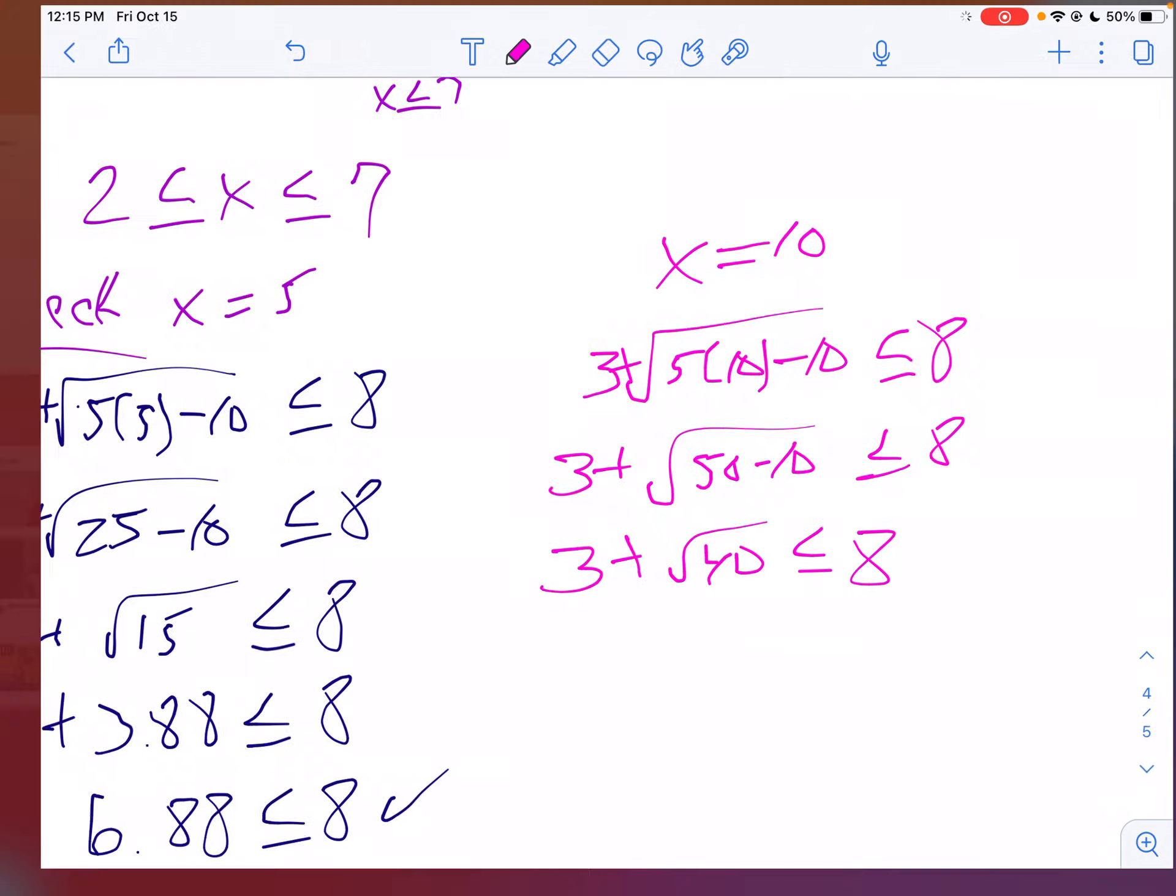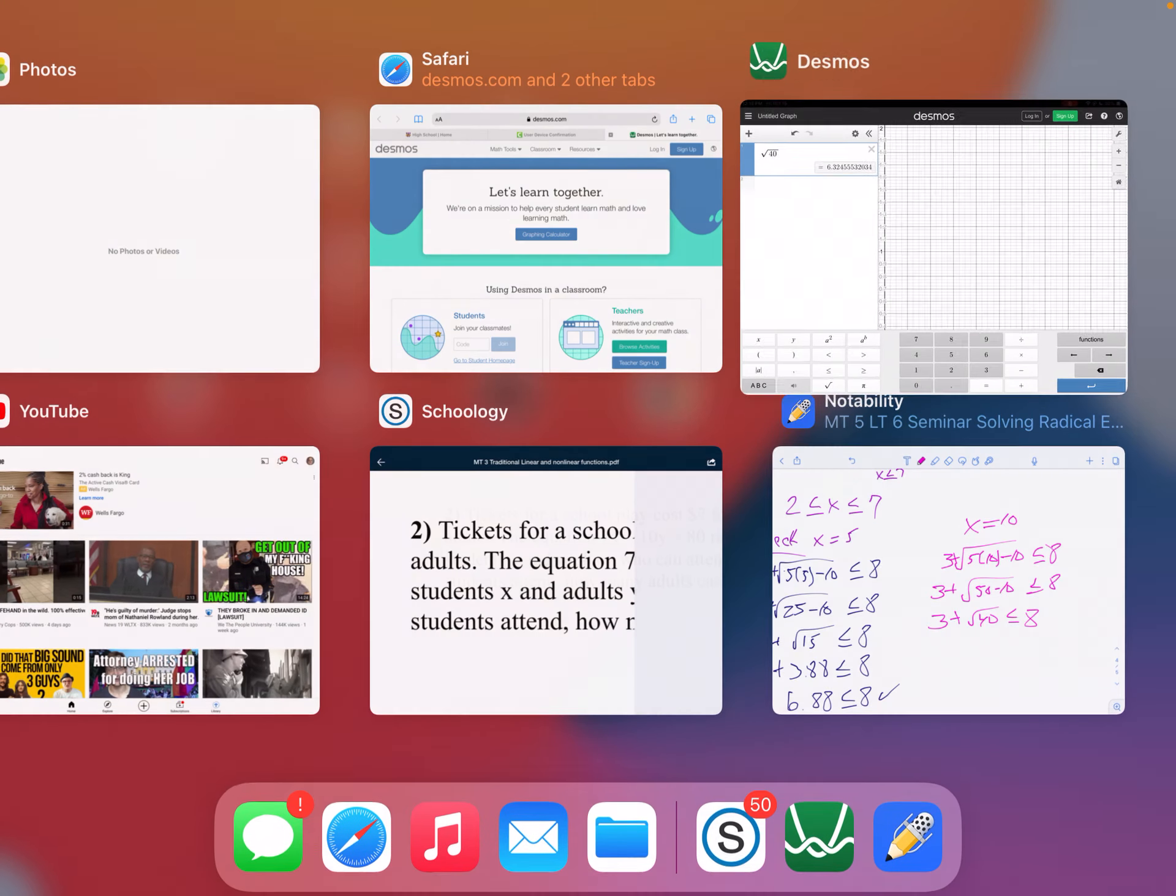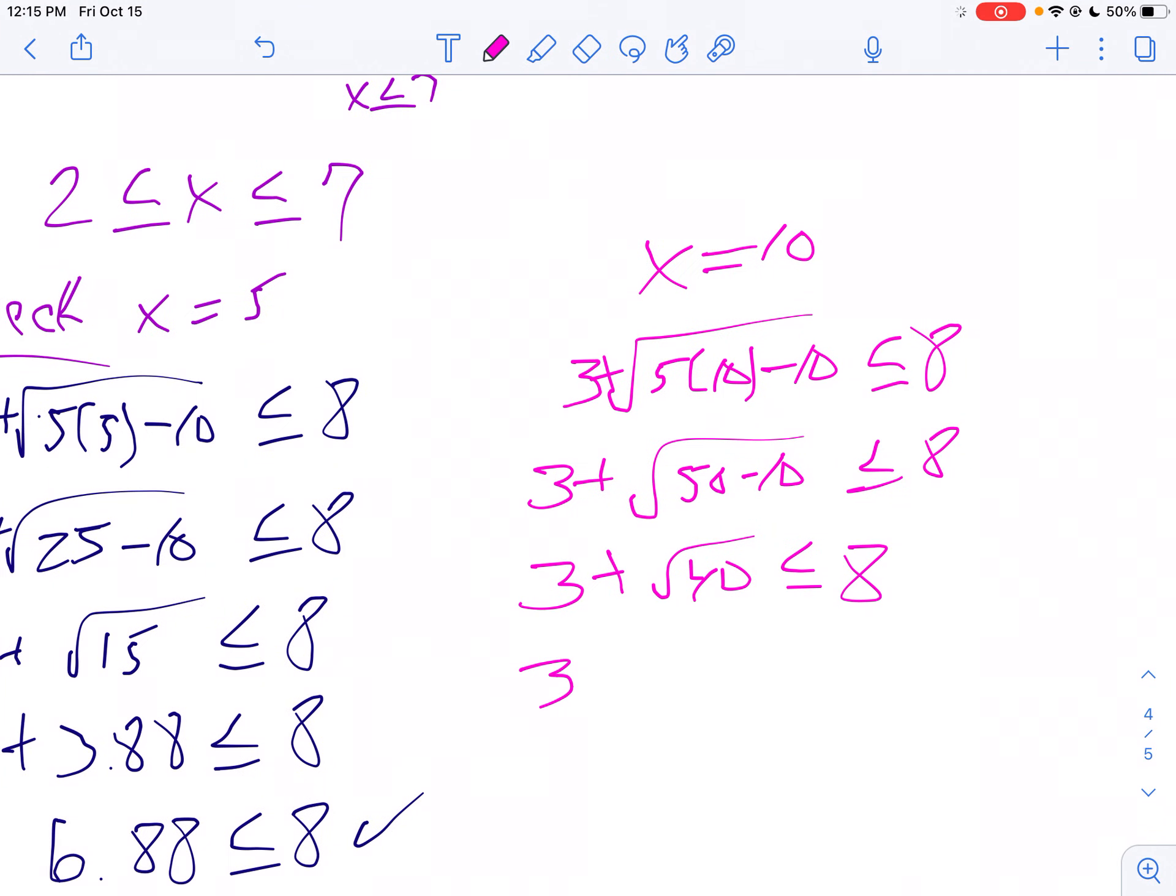Take the square root of 40, which is about 6.32. So 3 plus 6.32, is that less than or equal to 8? No, it's 9.32, which is not less than or equal to 8. That's false, and that's what we wanted. If you pick a number bigger than 7, it's not a solution. So our solutions are between 2 and 7.